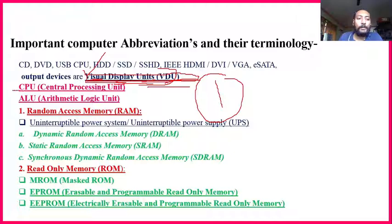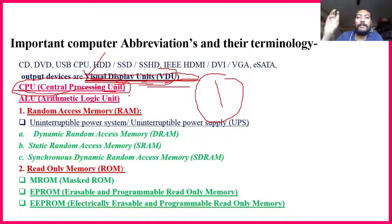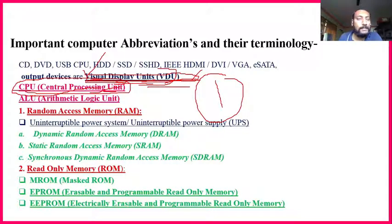CPU — Central Processing Unit — we already discussed this. It is called the brain of the computer. Whatever information we put in, it will be visible on our screen, which is the VDU. Under CPU there are three main parts: Main Memory, Control Unit, and ALU — Arithmetic Logical Unit.